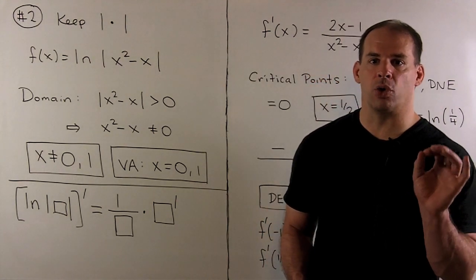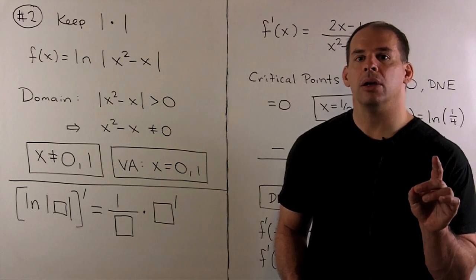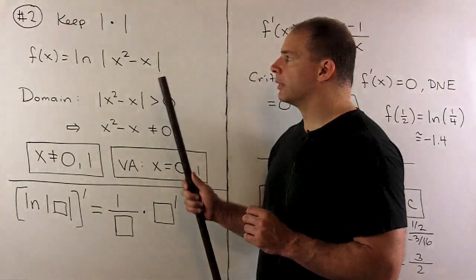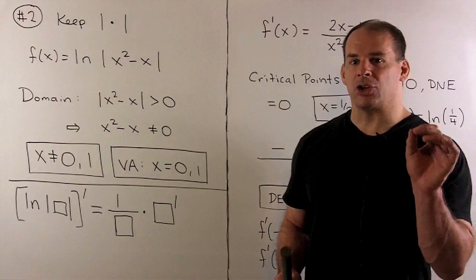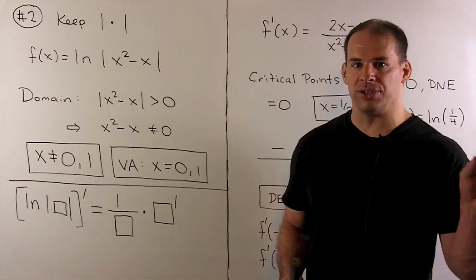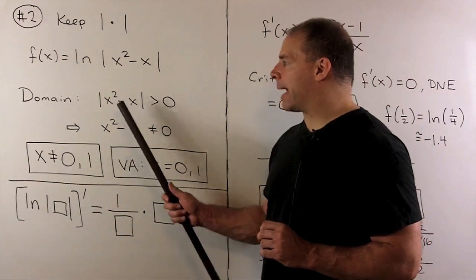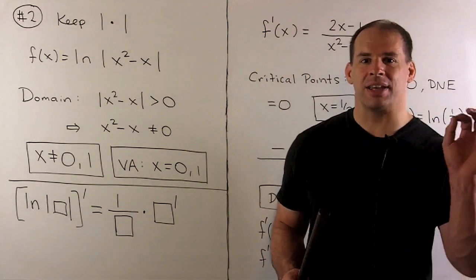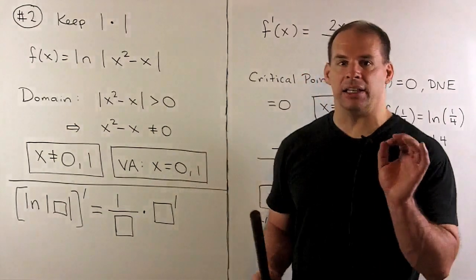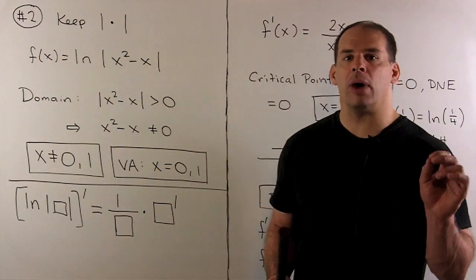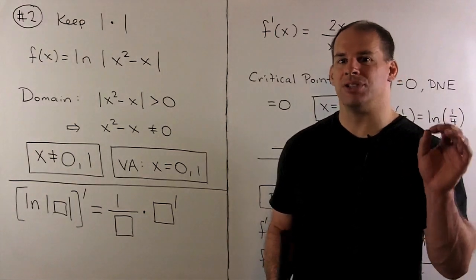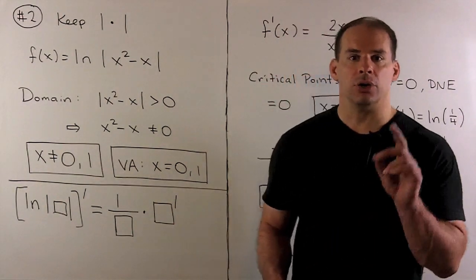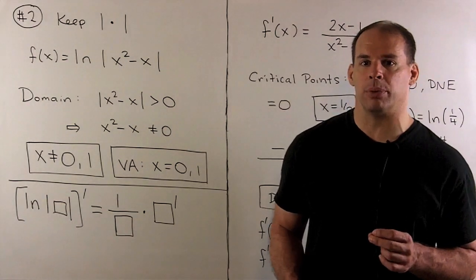Our first approach gets us to the graph just fine, but we don't need to be so hasty in eliminating the absolute value. For the domain, ln(y) is defined wherever y > 0. So the domain requires |x² - x| > 0, which holds for all x except where the inside equals exactly 0 — that is, x = 0 and x = 1. So the domain is x ≠ 0 and x ≠ 1, which agrees with the piecewise defined function.